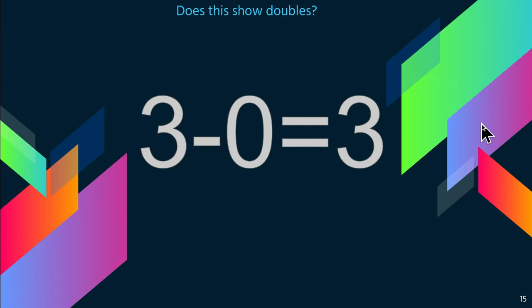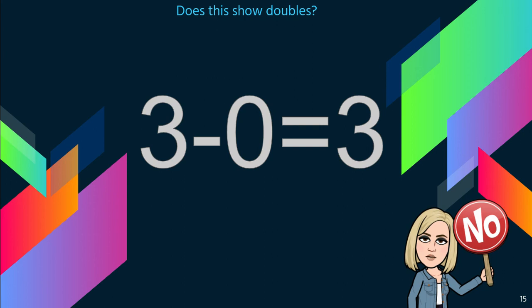Does this show doubles? No, because doubles is when you have the same number. And three minus zero is not the same. It would have to be three plus three to be a double.